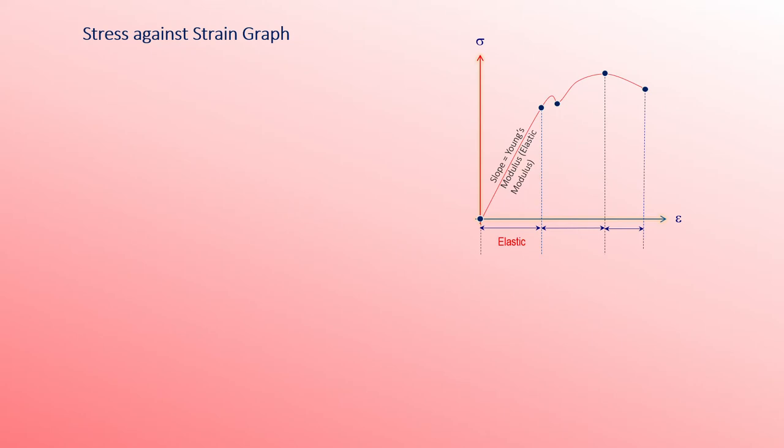The first section of the curve refers to the elastic region — the material remains elastic when stressed within its elastic limit. The second section refers to strain hardening, and the third section refers to necking. The point where the line remains straight is known as the elastic limit.